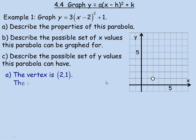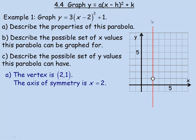Because the x-coordinate of the vertex is 2, the axis of symmetry will be x equals 2. That line is a vertical line that cuts right through the middle of the parabola. The parabola will be symmetrical about that axis of symmetry.